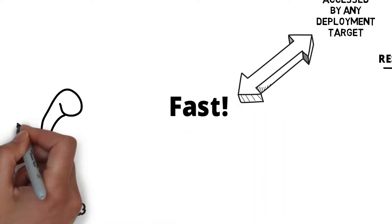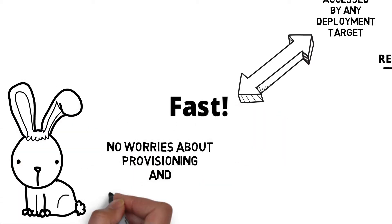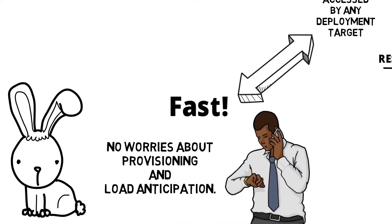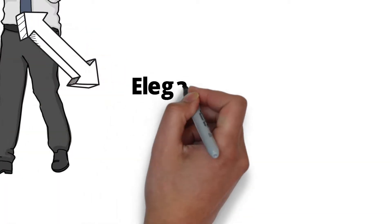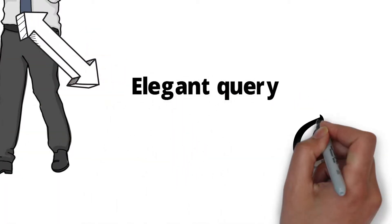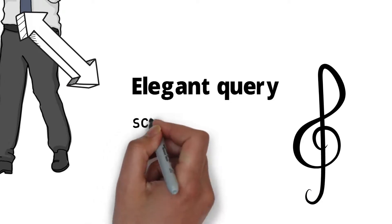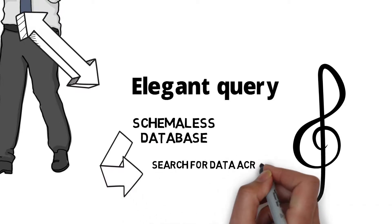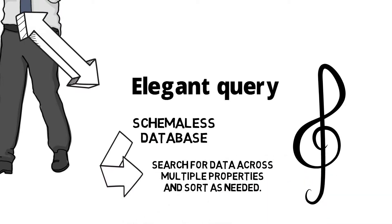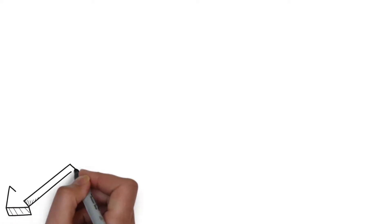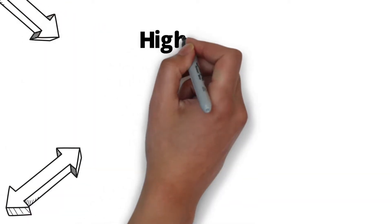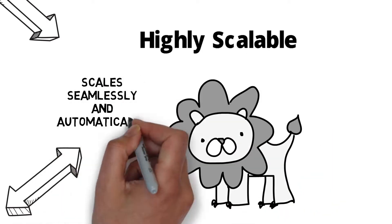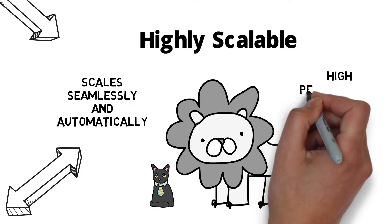Google Cloud Datastore is fast, meaning that we can focus on building applications without worrying about provisioning and load anticipation. Another great thing about any NoSQL database is the elegant querying — using a schema-less database allows for faster searching across multiple properties and sorting as needed. As with any NoSQL database, it has high scalability, scaling seamlessly and automatically, allowing for high performance even when traffic volume is growing.